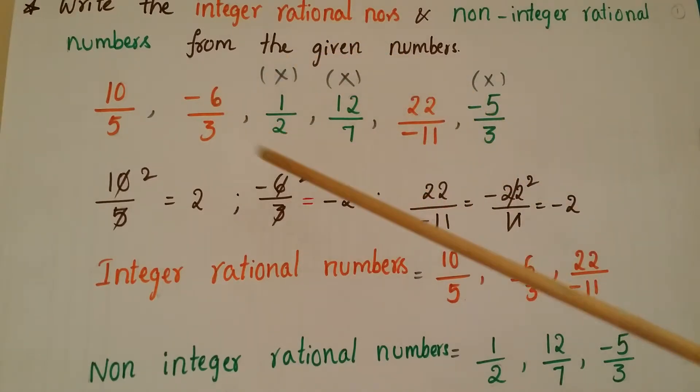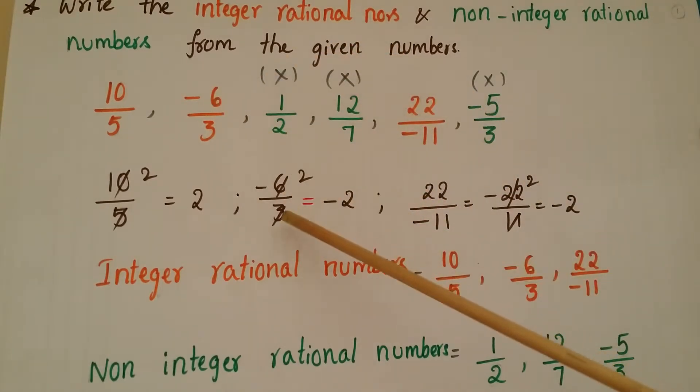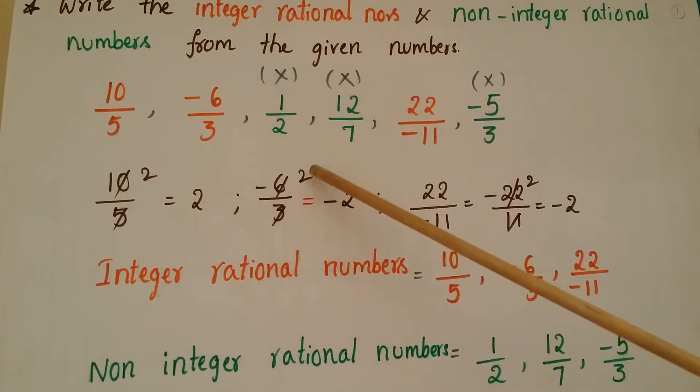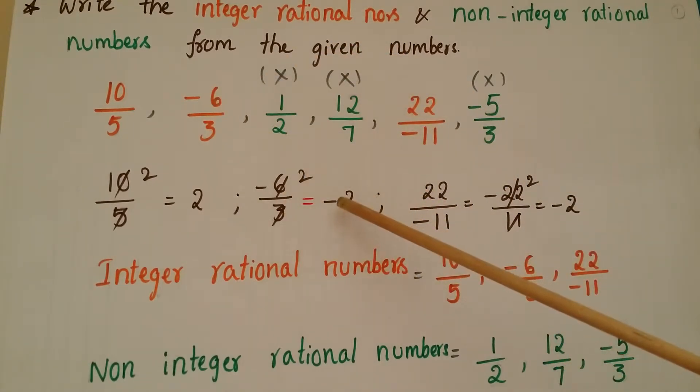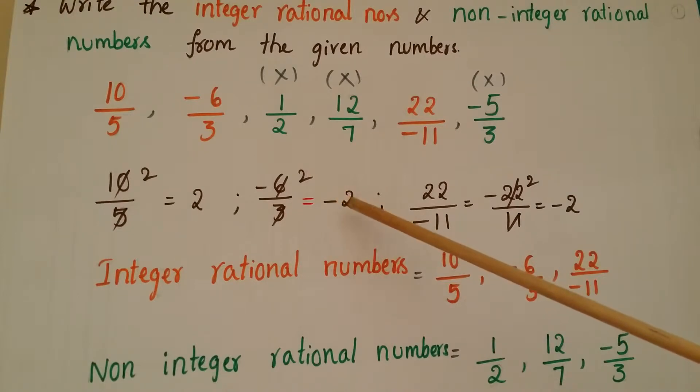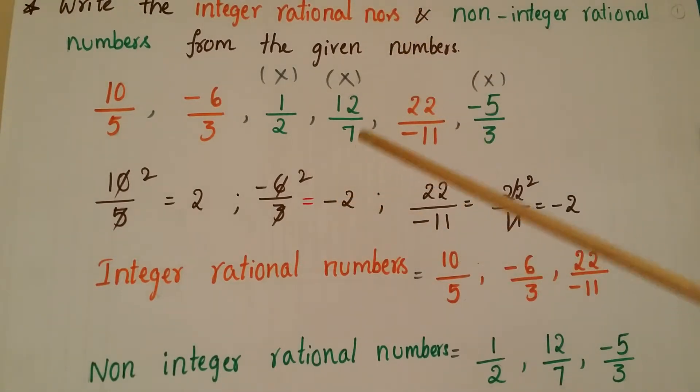Next, if you take minus 6 by 3, that equals minus 2, which is a negative integer. So this is also an integer rational number.